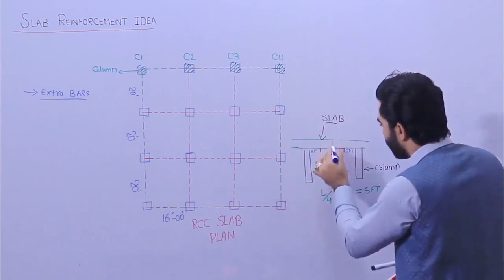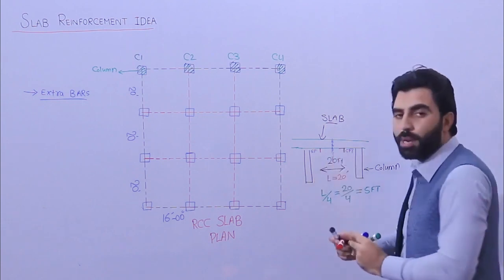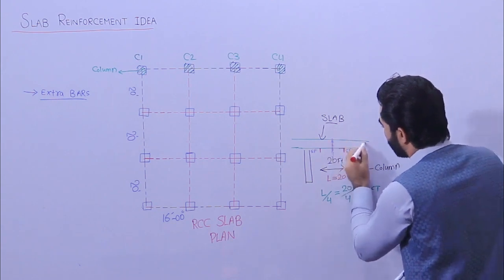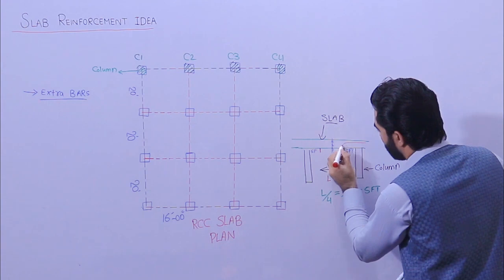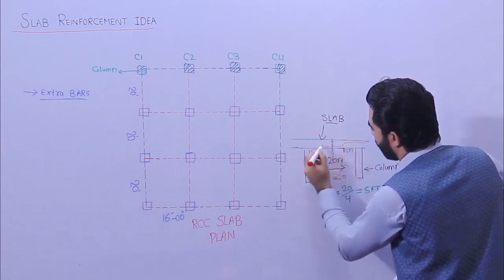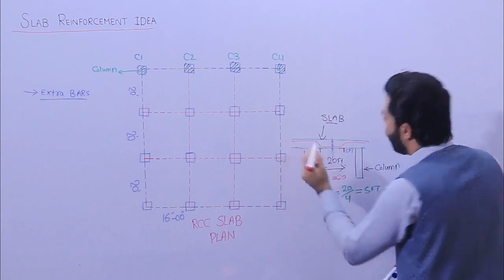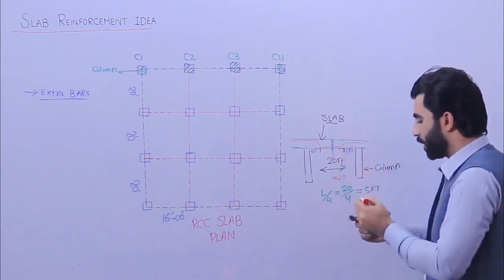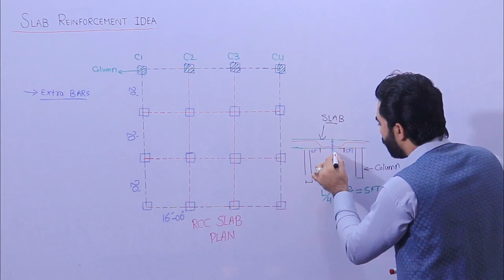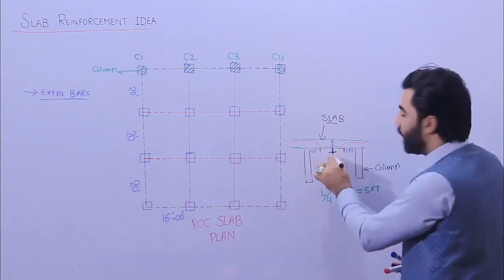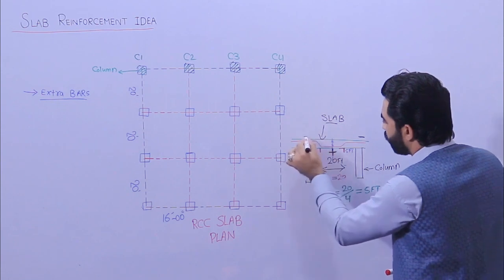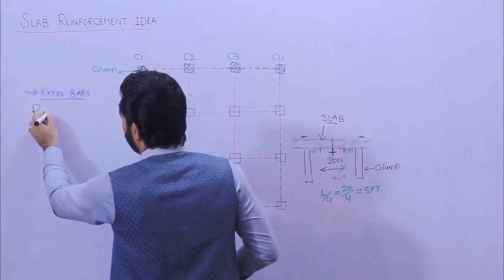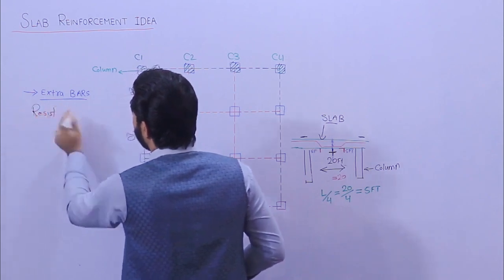This is the center line of the slab. Here we are placing extra steel rods to resist negative bending moment, or crank-up bars. The bar goes the same like this, and at this place it is bending — this is called a bent-up bar or extra steel rods. Both can be used at this place to resist negative bending moment. Here we have positive bending moment at the center, and here at the supports we have negative bending moment. Extra steel rods resist negative bending moment.